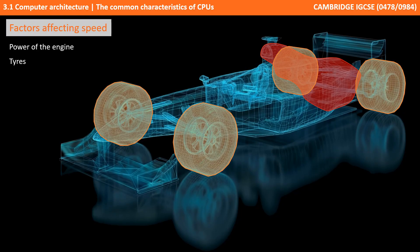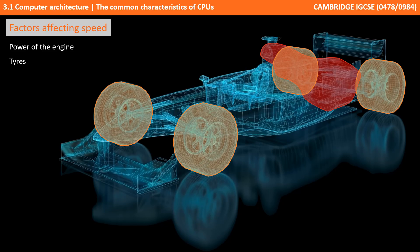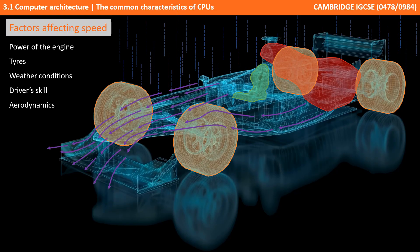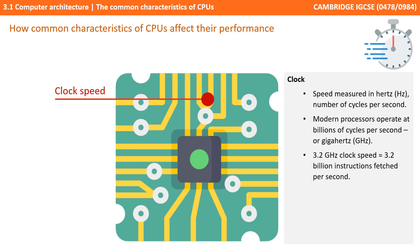So what else have we got? Well, we've got the tyres — these will have a big overall impact on the speed of our racing car. We've got the weather conditions, the driver's overall skill, and the aerodynamics of the racing car. As you can see, there are lots of factors which determine the overall speed of a racing car in any particular race. In a similar way, the performance of the CPU is affected by various factors.